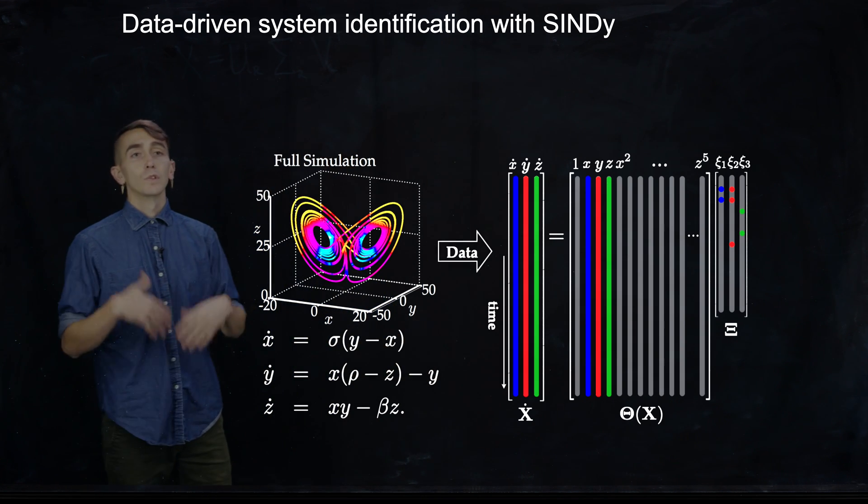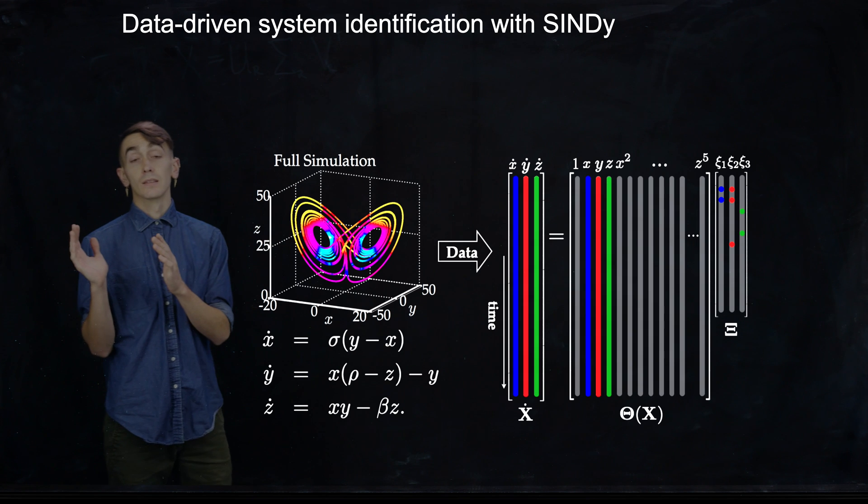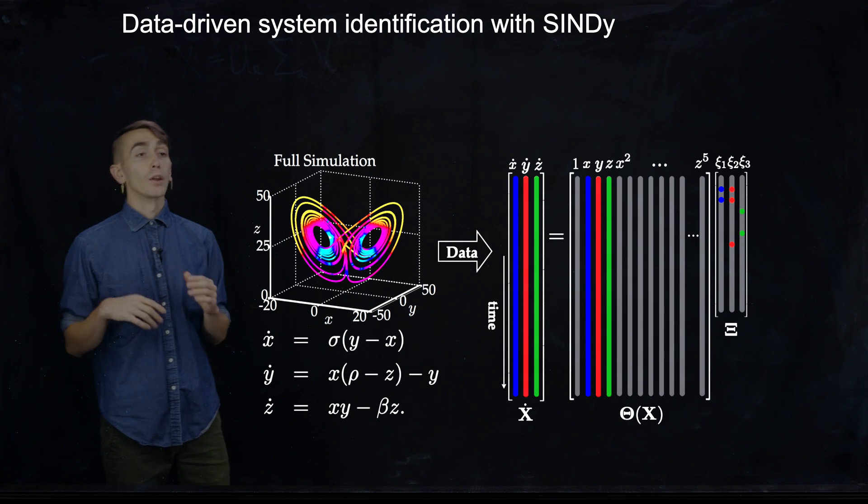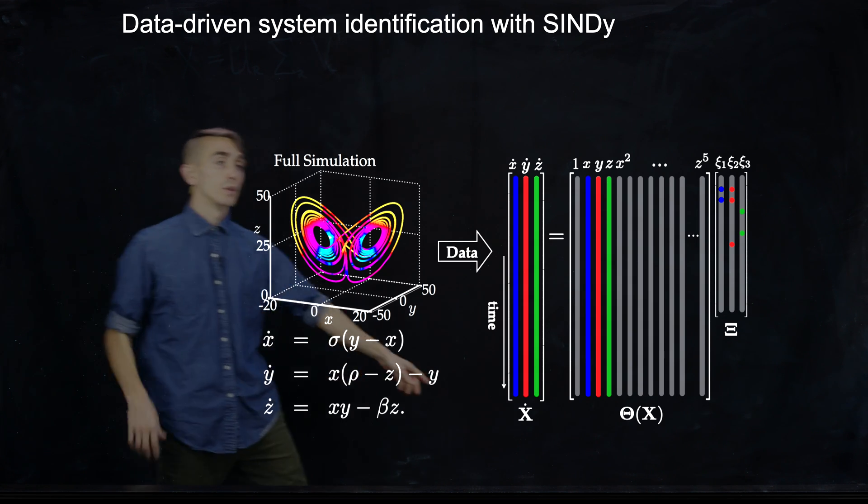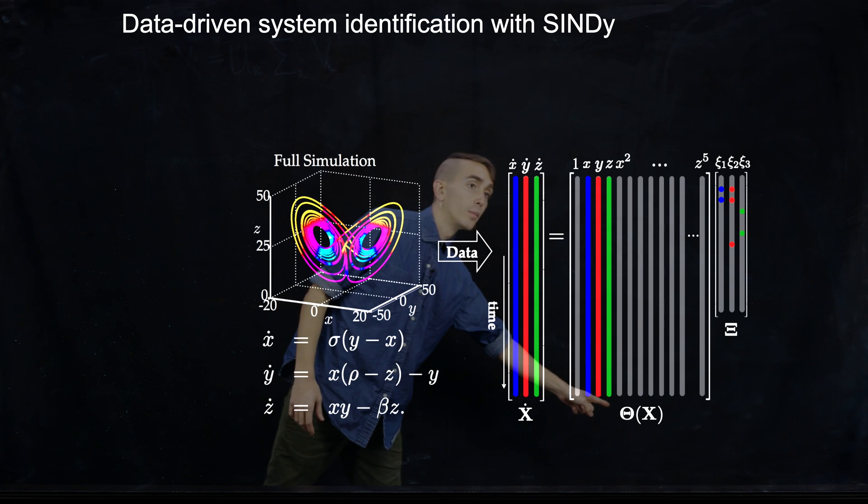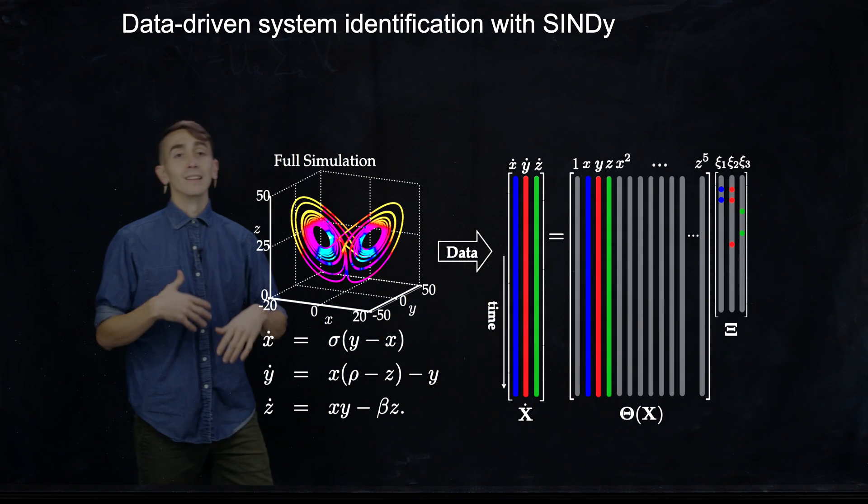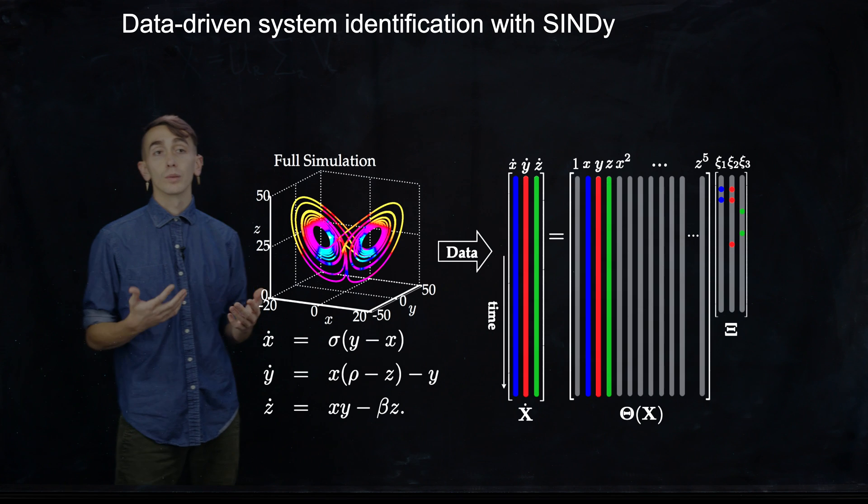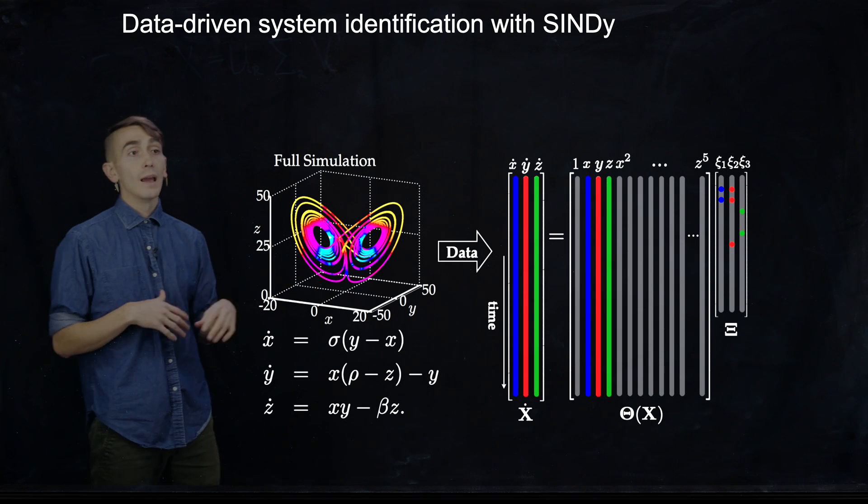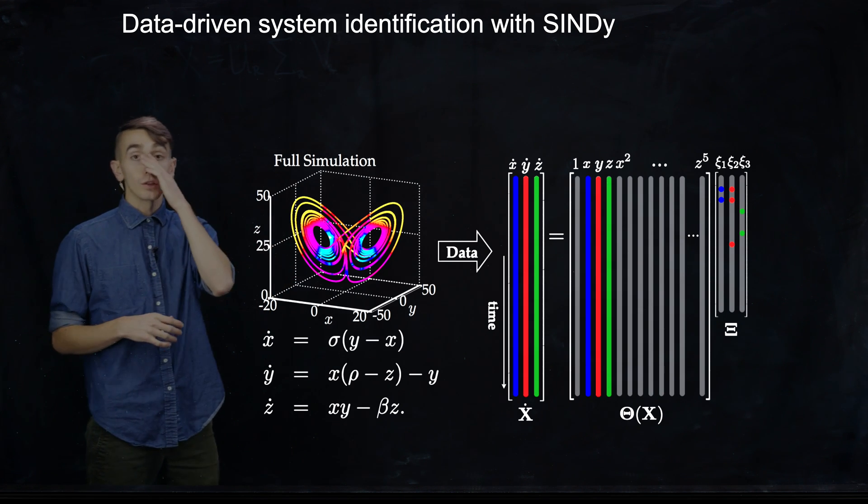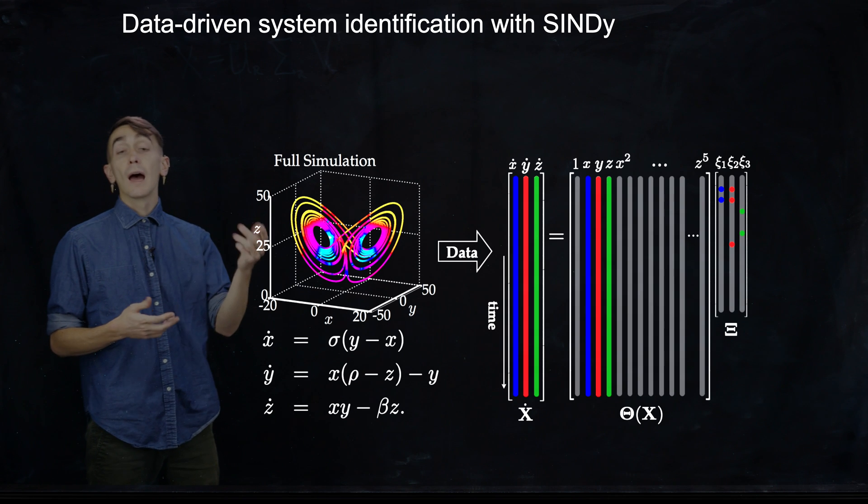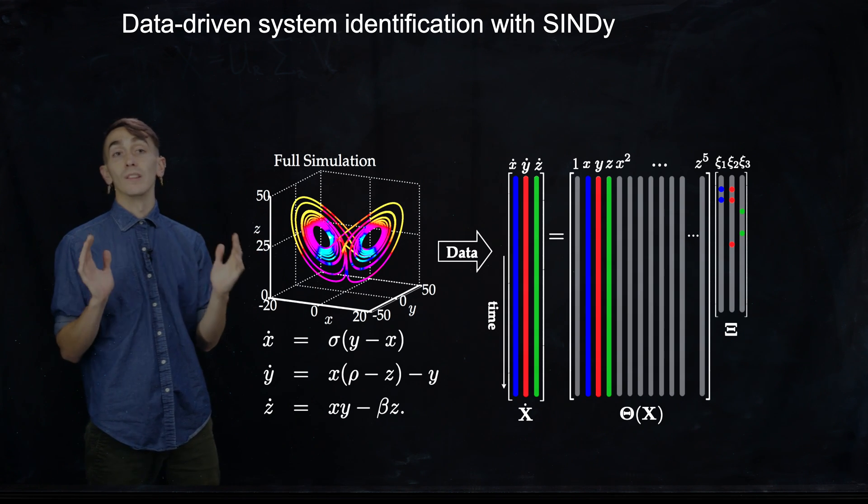So we put our data on the left hand side of an equation. And then on the right hand side of an equation, we put this theta matrix here, which is just a list of candidate library terms that could be on the right hand side. And then that last matrix is just a coefficient matrix that chooses how strong are each of those terms in that candidate library.